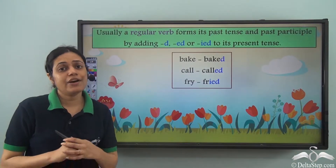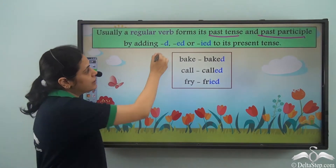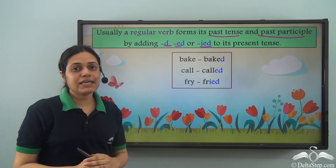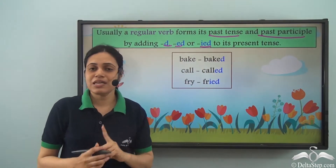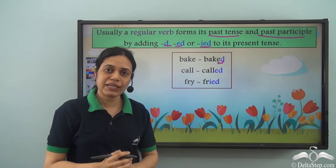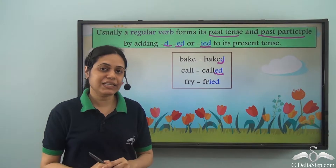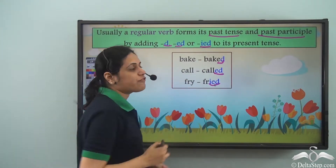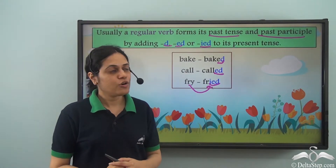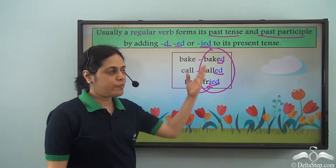Usually a regular verb forms its past tense and past participle by adding d, ed, or ied to its present tense. Like 'bake' — a regular verb — forms its past tense 'baked' by adding d, and the past participle is also 'baked'. Similarly, 'call' forms 'called' by adding ed, and 'fry' forms 'fried' by adding ied — the y is removed and ied is added. The past participle forms of these verbs are the same as their past forms: baked, called, fried.